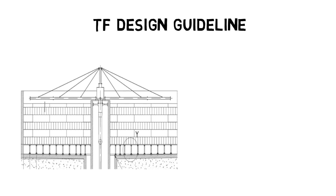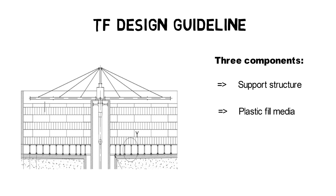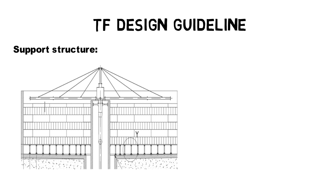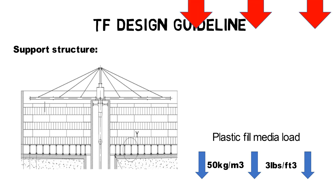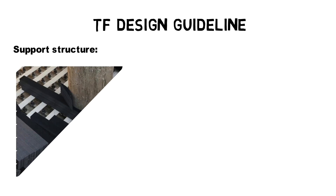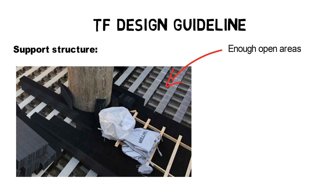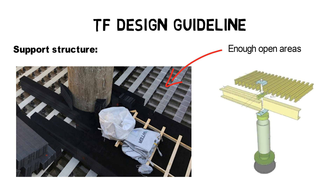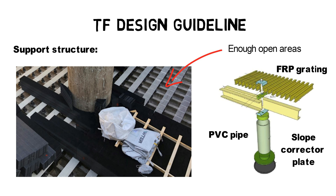For the design of trickling filters, three components are very important: the support structure, plastic-fill media layers, and the rotary distributor. The support structure has to withstand high vertical loadings of up to 50 kg per cubic meter (3 lb per cubic foot) of plastic-fill media, plus up to 250 kg per cubic meter (15 lb per cubic foot) for attached sludge and water inside the fill media packs. At the same time, the supporting structure must leave enough space for sludge collection and removal and to avoid blockage of plastic-fill media channels. Therefore, the support structure typically consists of PVC stanchions, FRP grating, and slope-corrector plates to adjust for bottom slopes.